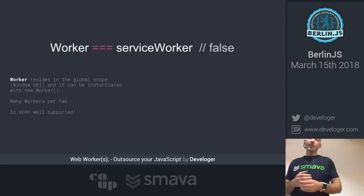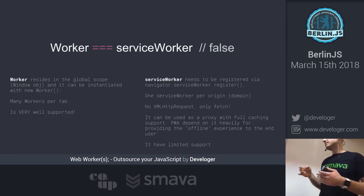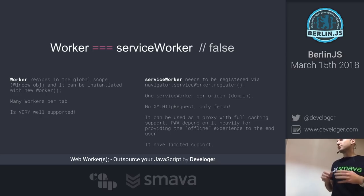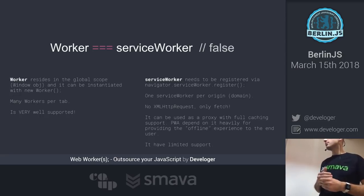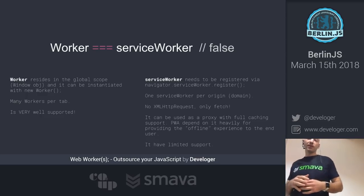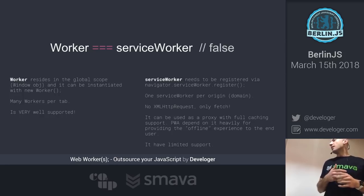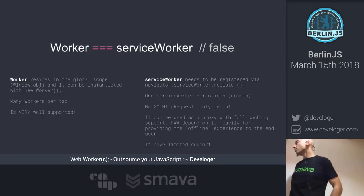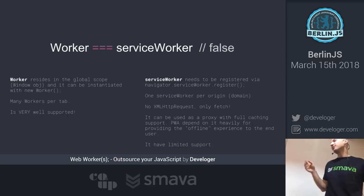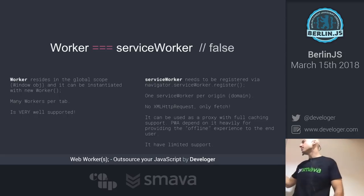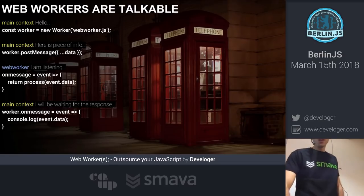Service workers need to be registered using navigator.serviceWorker.register, and you can only have one service worker per domain — that was the whole idea. It acts more or less as a proxy for your data, handling caching and similar heavy lifting. Also, you cannot use XMLHttpRequest within the service worker — you use fetch instead. With XMLHttpRequest you'd need a lot of custom logic or third-party libraries to do simple things that just come built into fetch.